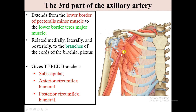The subscapular artery is the largest branch of the axillary artery and is the major blood supply to the posterior wall of the axilla. It also contributes to blood supply of the posterior scapular region and divides into two terminal branches: the circumflex scapular artery and the thoracodorsal artery. The circumflex scapular artery passes through the triangular space, contributing to an anastomotic network of vessels around the scapula. The thoracodorsal artery follows the lateral border of the scapula to the inferior angle, supplying the posterior and middle wall of the axilla.